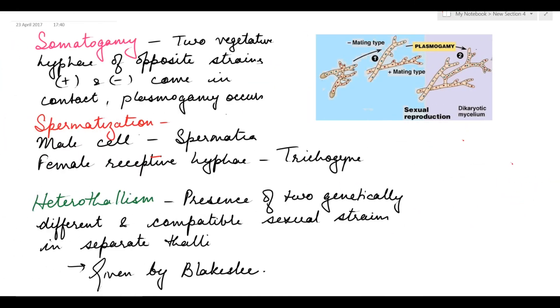Next is somatogamy. In somatogamy, two vegetative hyphae of opposite strains, when they come in contact with each other, plasmogamy occurs forming dikaryotic mycelium. Last is spermatization, where the male cell is spermatium and the female receptive hypha is trichogyne. When the spermatium comes in contact with trichogyne, plasmogamy occurs. These are the different ways in which plasmogamy occurs in fungi.